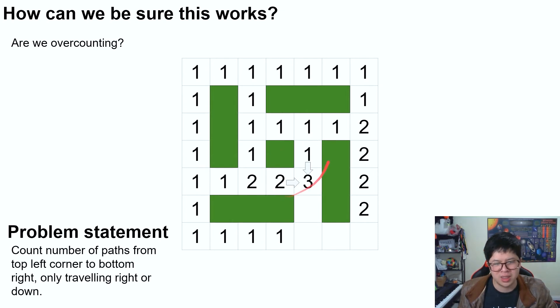So are we over counting the number of ways to get to a certain cell? As in, is there a path that we're counting twice using this method? Well, the answer is no,